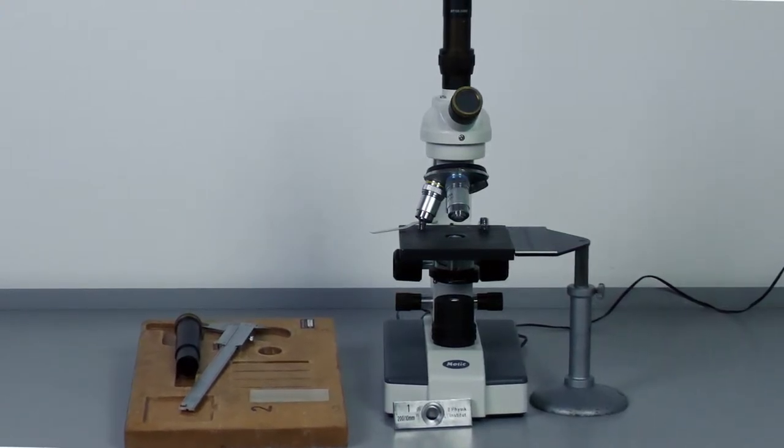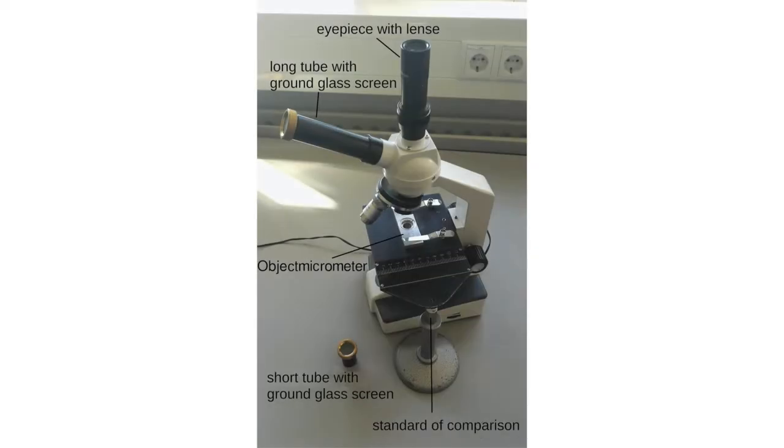The setup of the first part consists of a microscope with three objectives and two eyepieces connected by a beam splitter, two interchangeable microscope tubes with ground glass screen, one object micrometer, and one standard of comparison.